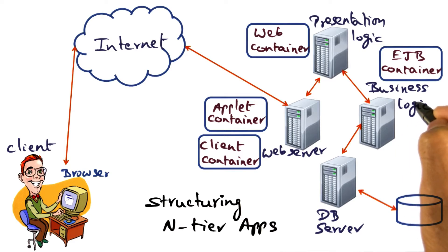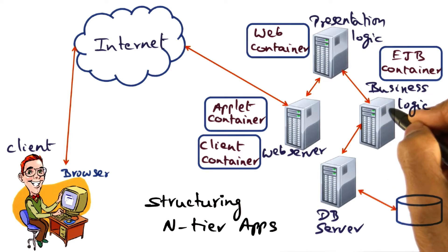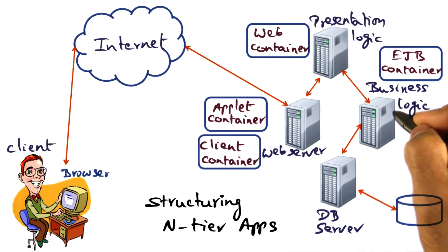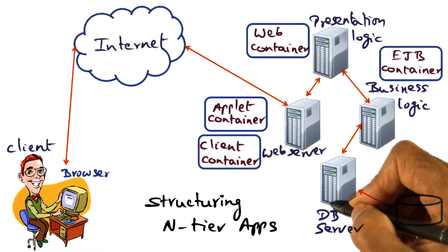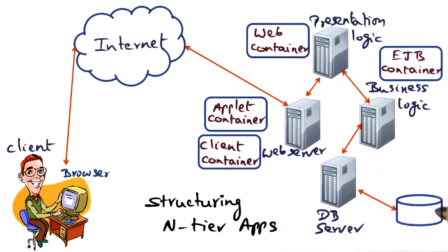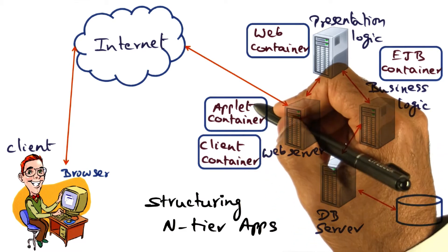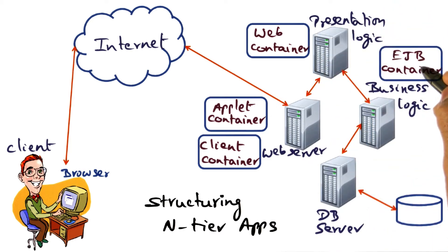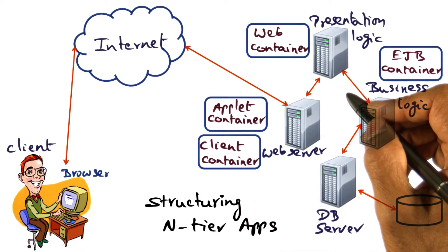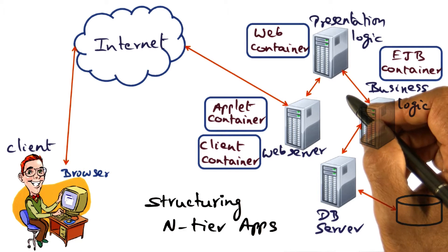There is an EJB container, which manages the business logic that corresponds to what needs to be done to carry out the request from the end client. There may also be a database server that the business logic communicates with to get access to the data needed to process the request. So these are the four containers — the client container, the applet container, the web container, and the EJB container — available for packaging objects that constitute the N-tier application for providing a particular service, for example, an airline reservation or hotel reservation service.